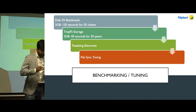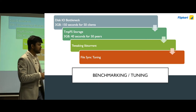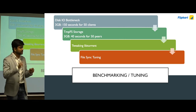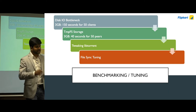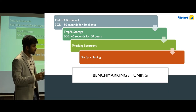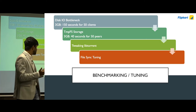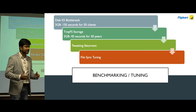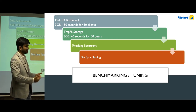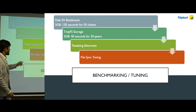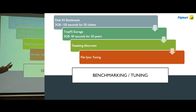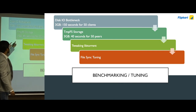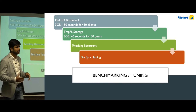To solve the disk bottleneck, before starting a download we mount an in-memory file system — a tmpfs volume — and complete the entire download in-memory. All pieces getting downloaded and uploaded while the torrent is in progress happen through in-memory storage. Once the torrent is complete and we have the entire file, we serve it to the LXC container ecosystem to spin up a container. We no longer need random writes since all pieces are assembled. Then we do a file flush, move it to the hard disk, and free up the in-memory file system.